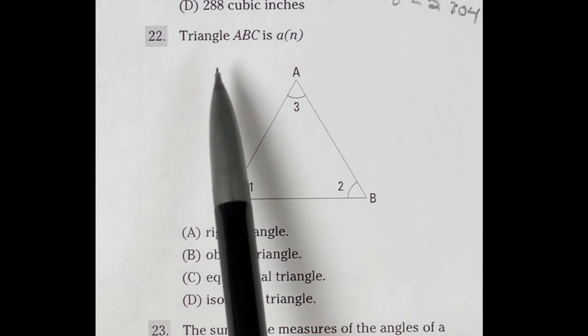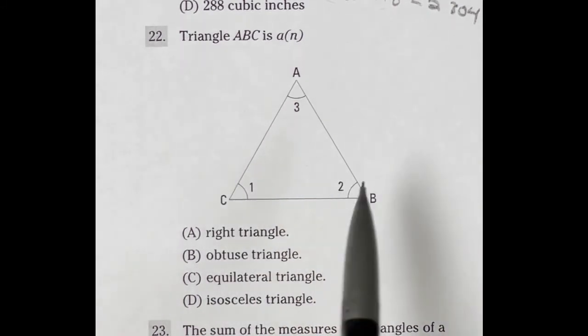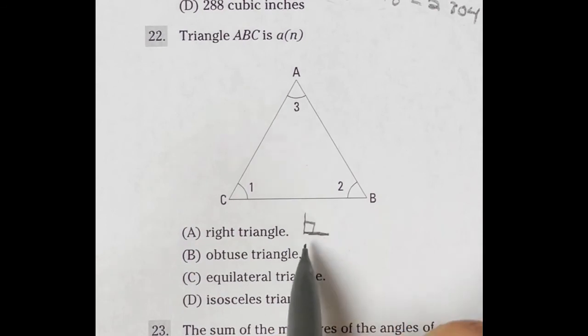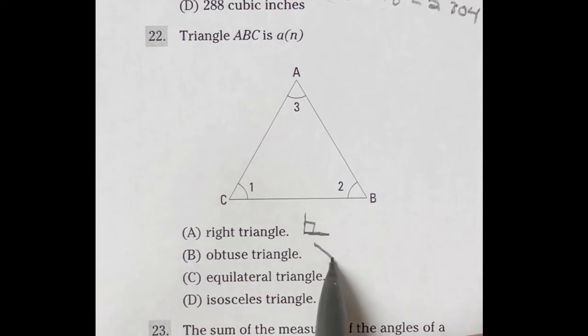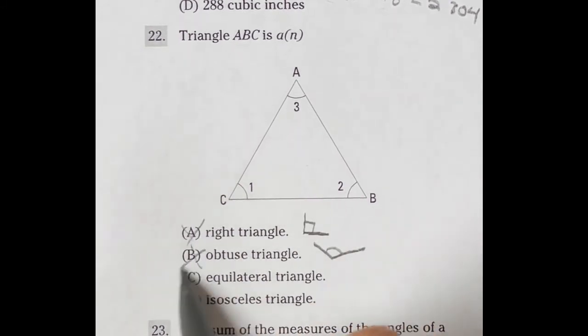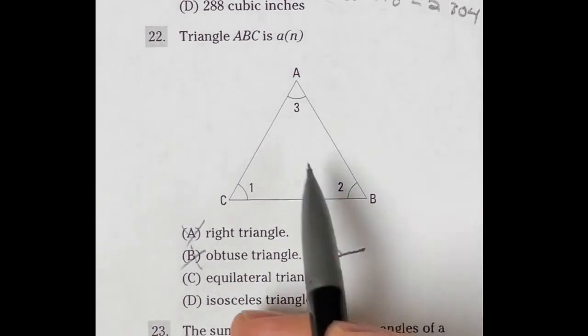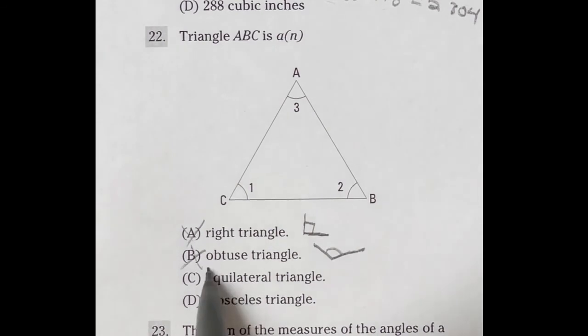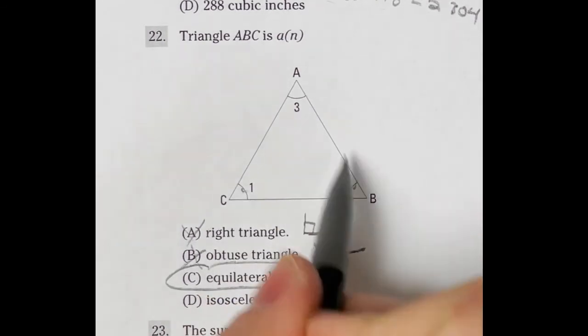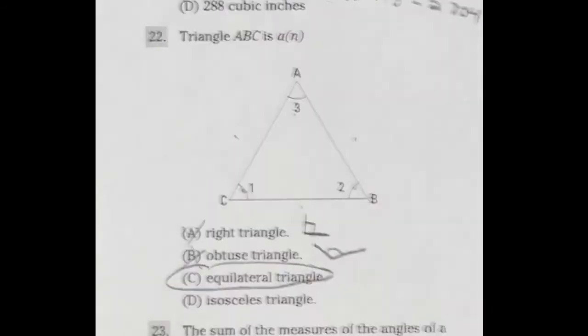Number 22 on the ASVAB says, what kind of triangle is this? Well, a right triangle means that it has a 90 degree angle in it, which isn't possible here because these are all smaller than 90 degrees. Obtuse means that it has an angle that is wider than 90 degrees, which that's also not the case here. An equilateral triangle means that all three are the same, and isosceles means only two of them are the same. So in this case, C is going to be our answer because all three of these angles and all three of these sides look to be the same.